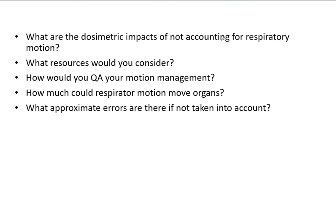So what are the dosimetric impacts? There's a lot. For example, complete target miss — that's obviously the big one and the most scary. You also have dose blurring, where there are not steep gradients on the PTV. Ultimately that dose is kind of blurred, which gives more dose to the critical organs surrounding the PTV. And throughout the PTV, there may be cold or hotspots — you don't want that.